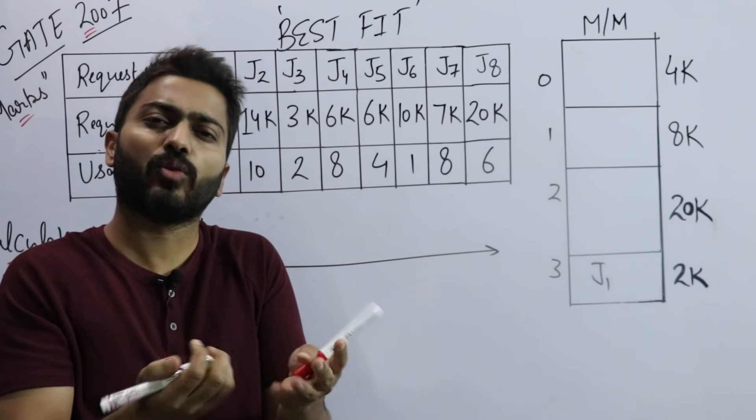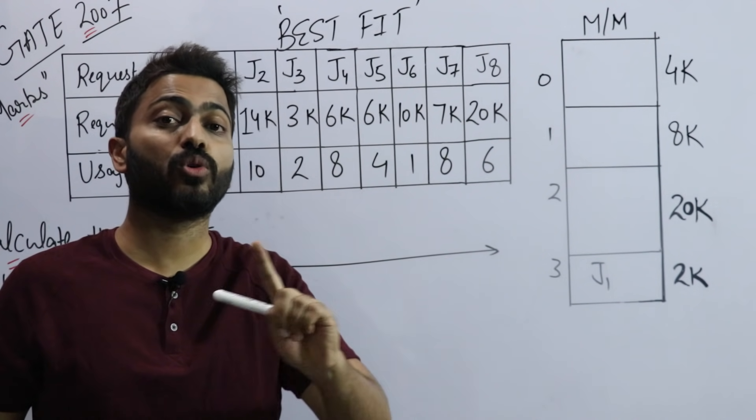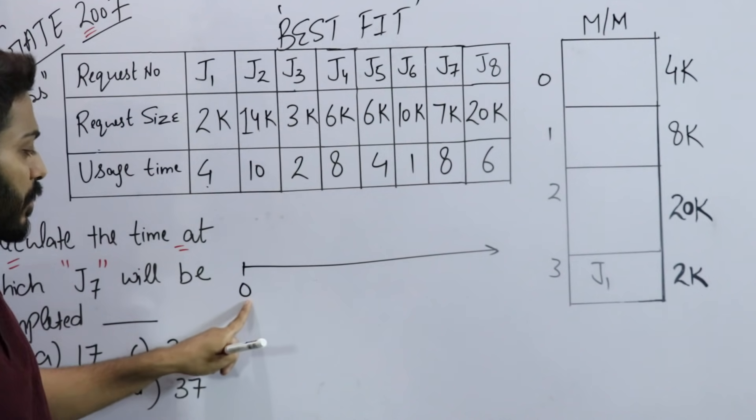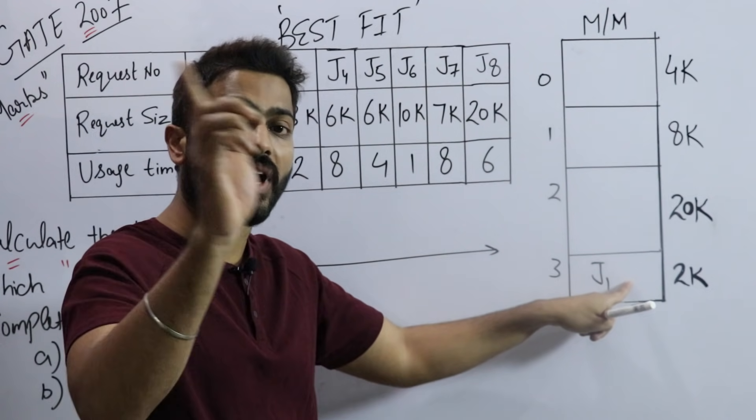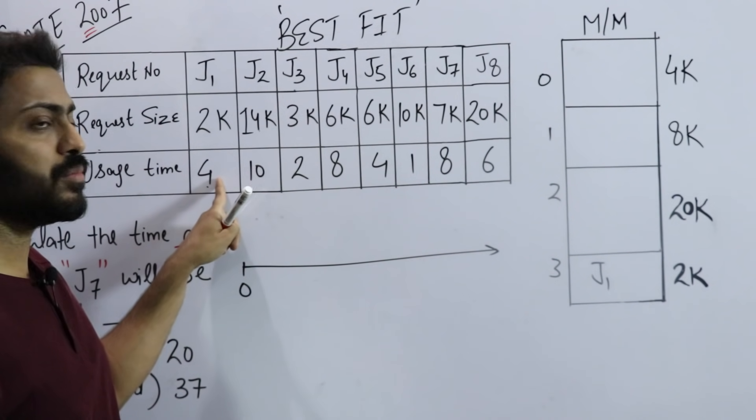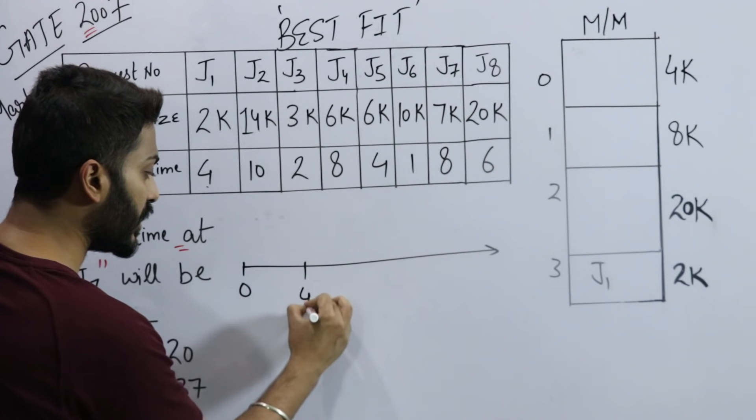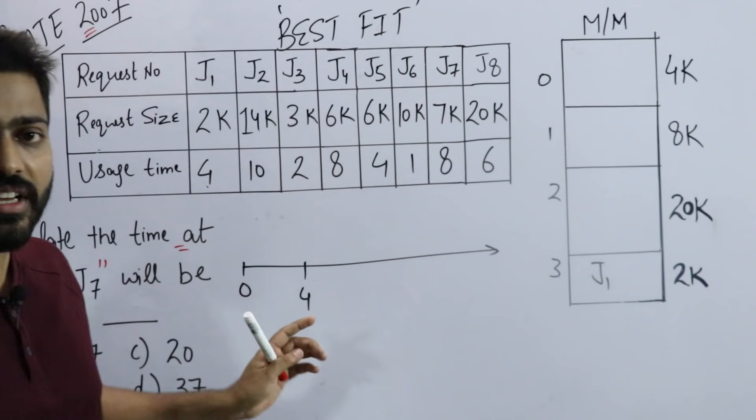But we will put them one by one in RAM. If we talk about time zero, J1 came first. I placed J1 here. When will J1 exit? When it completes time 4. This means when time reaches 4, J1 will automatically be removed and the slot will become free.